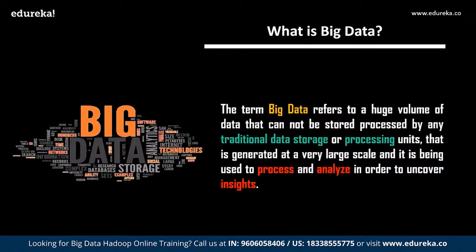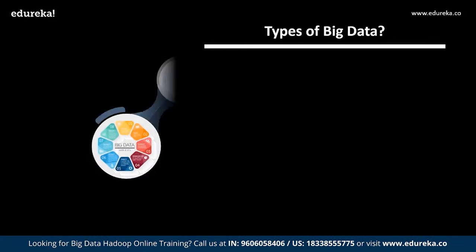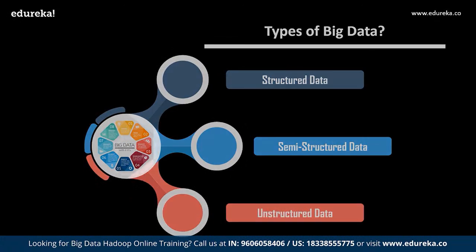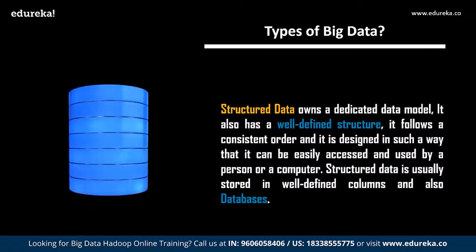Now let us move ahead and understand the types of big data. Big data is generally characterized into three different varieties: structured data, semi-structured data, and unstructured data. Structured data owns a dedicated data model. It has a well-defined structure, follows a consistent order, and is designed so that it can be easily accessed and used by a person or a computer. Structured data is usually stored in well-defined columns in databases — for example, a simple DBMS.